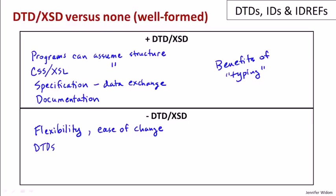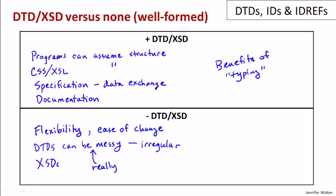Another fact is that DTDs can be fairly messy. If the data is irregular, specifying its structure can be hard — especially for irregular documents. And when we see the schema language, we'll discover that XSDs can be really messy and can get very large. It's possible to have a document where the specification of the structure is much larger than the document itself. Overall, this is the benefits of no typing — quite similar to the analogy in programming languages. The remainder of this video will teach about DTDs themselves through a set of examples, and we'll have a separate video for XML schema and XSDs.